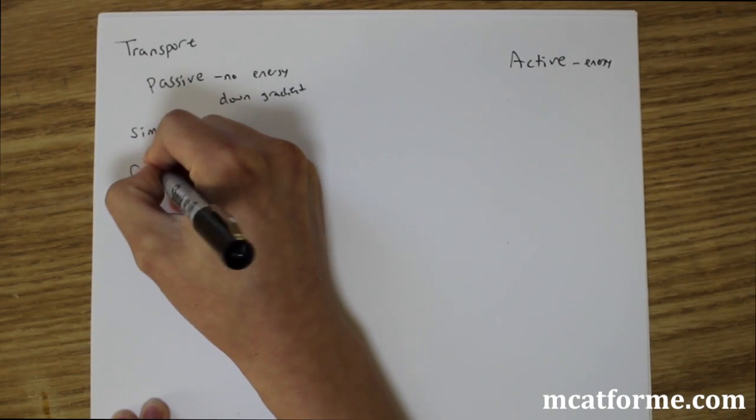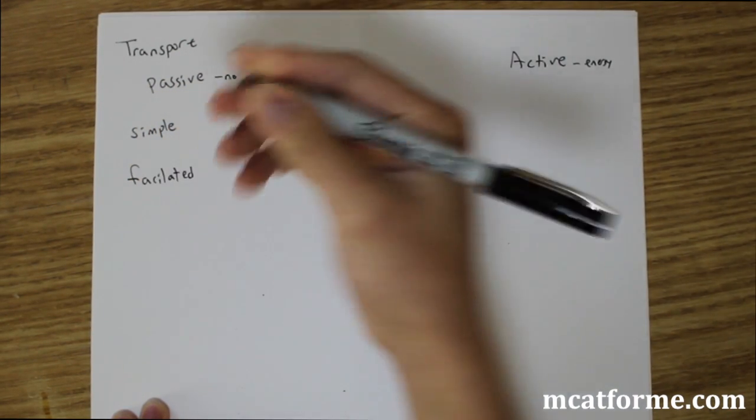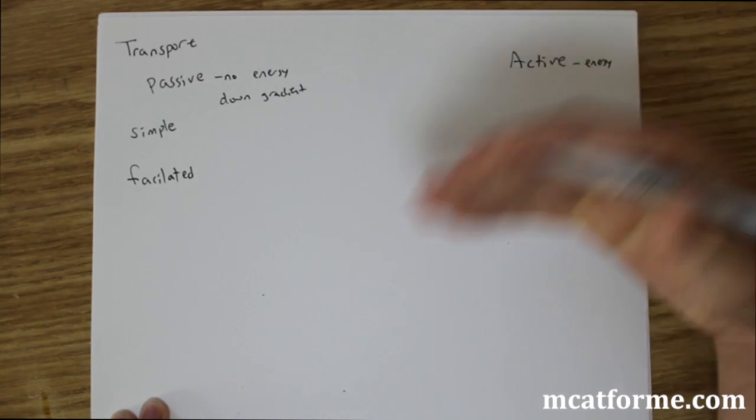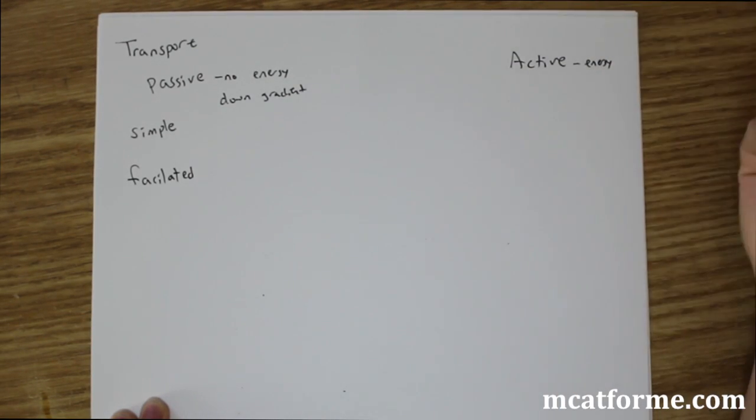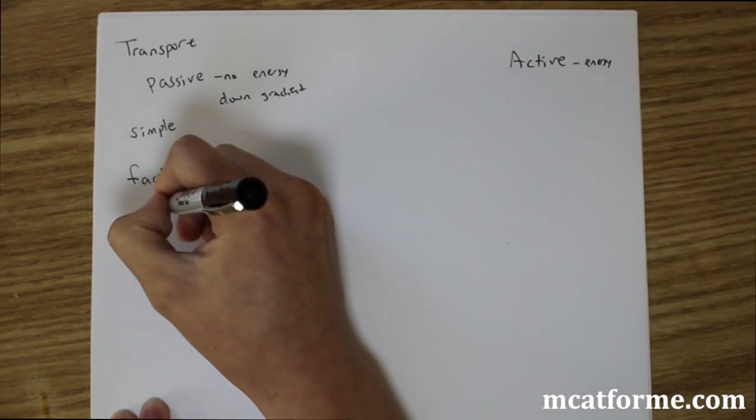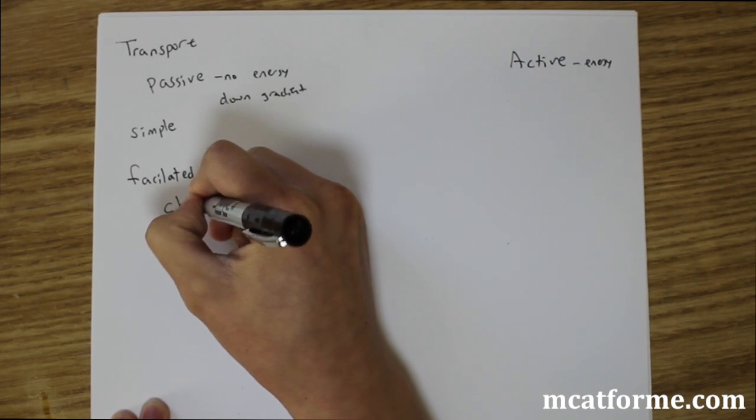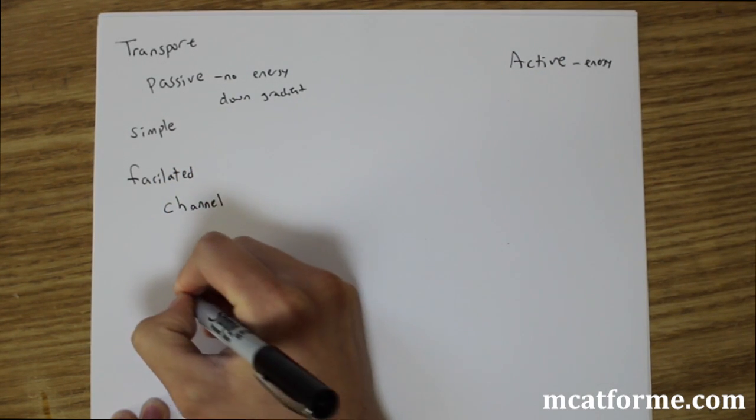Versus facilitated. And if you know facilitated is like facilitate something, you're helping with something. So you need some type of helper molecules. So there's two different helper molecules which are channels and also carriers.